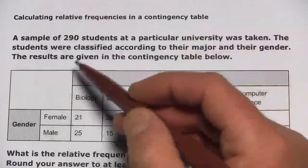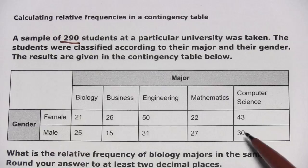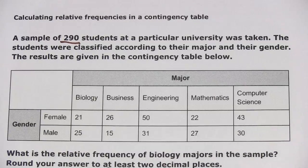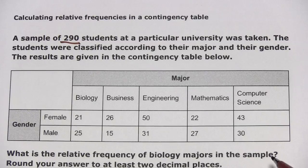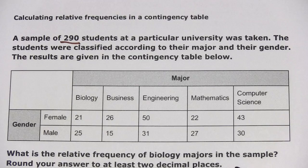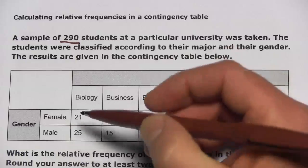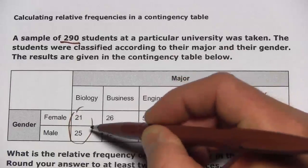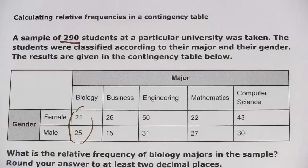They're telling us the sample size here is 290, so all of these boxes add up to 290. And they're asking: what is the relative frequency of biology majors in the sample? The calculation here is pretty simple — you just have to find all the biology majors. There are male and female biology majors, so you have to add those two together.